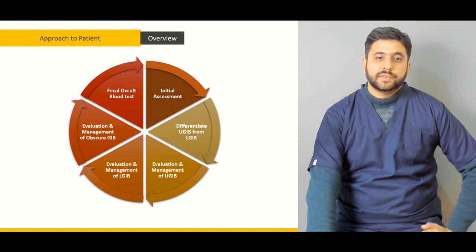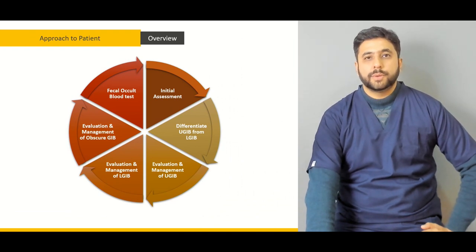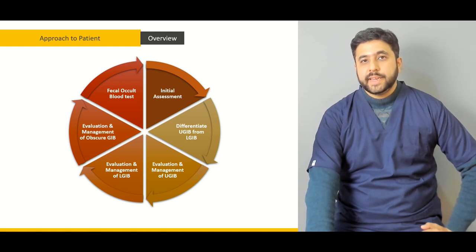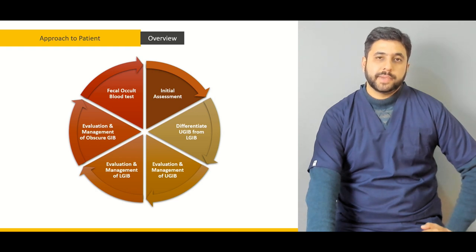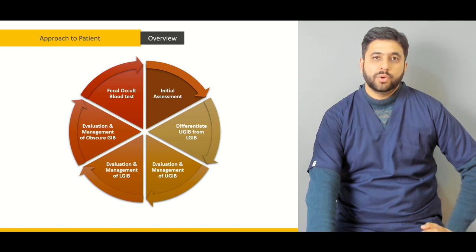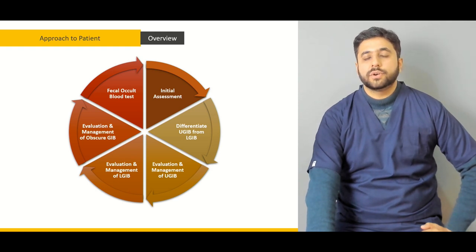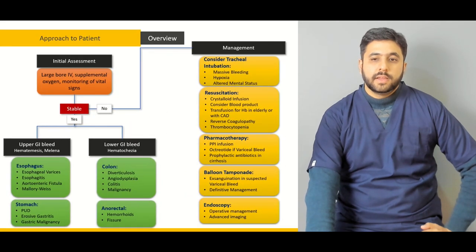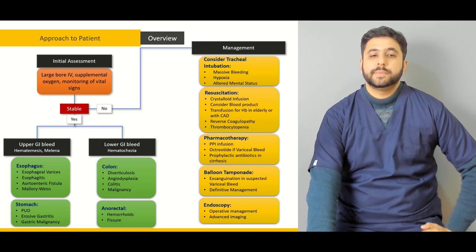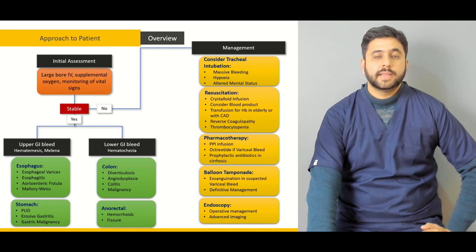In the latter part of the lecture, we are going to discuss how we are going to approach someone presenting with a GI bleed. What are the various steps involved? How do we stabilize the patient if the patient is unstable? And after stabilizing, how do we differentiate an upper GI bleed from a lower GI bleed, and what are the different contrasting points in the management of both disorders? A thorough explanation of someone presenting with the upper GI bleed or someone who is hemodynamically unstable will be discussed.